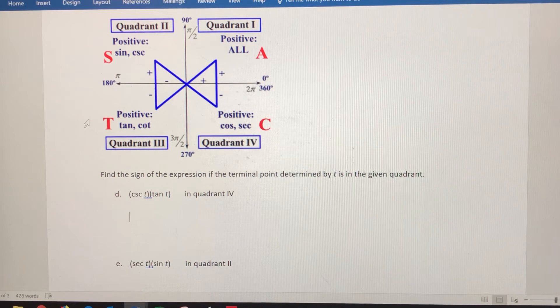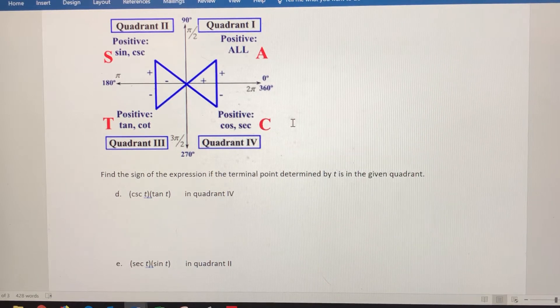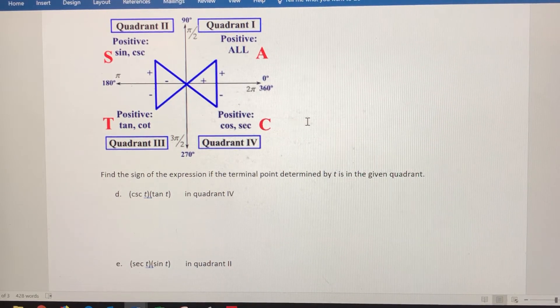In quadrant three, tangent and cotangent are positive. The other four are negative. And in quadrant four, cosine and secant are positive. The other four are negative.